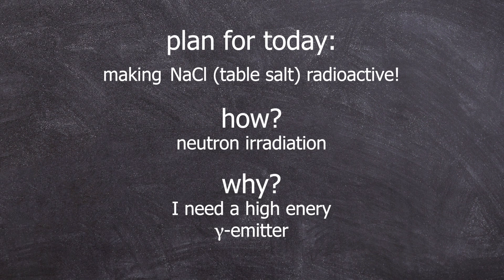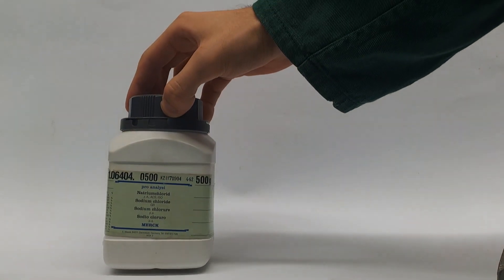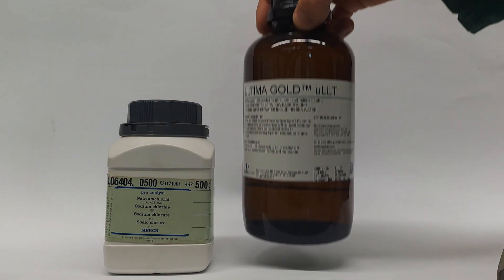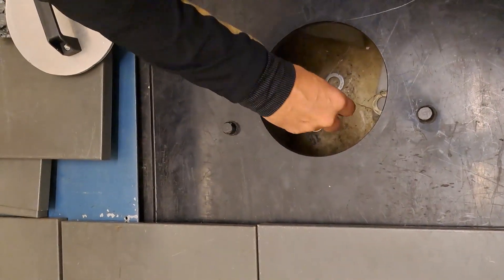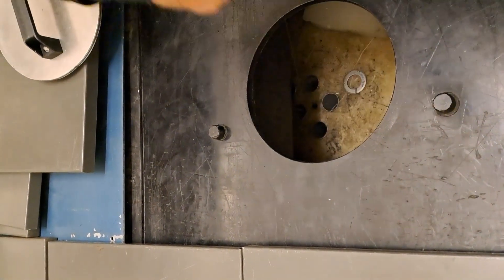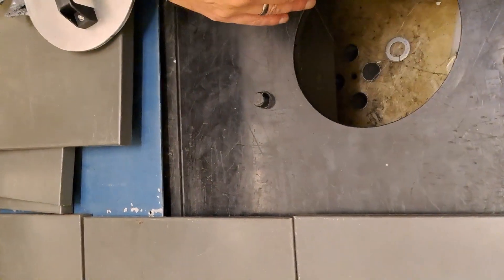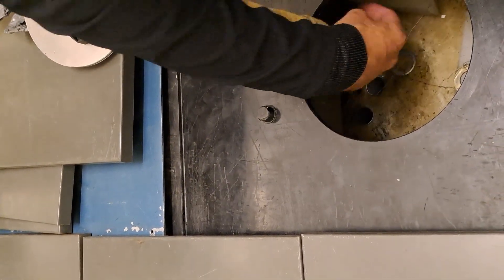For this, we need just regular sodium chloride and the Ultima Gold Liquid Scintillation Cocktail. This salt is placed in our neutron source, receiving a good dose of radiation therapy. The neutron flux amounts to about 10 million neutrons per second per centimeter squared.